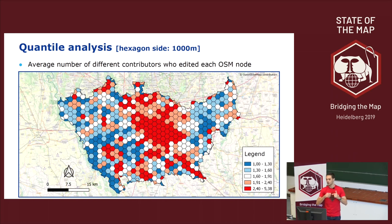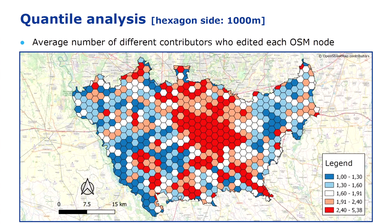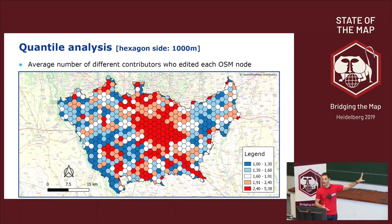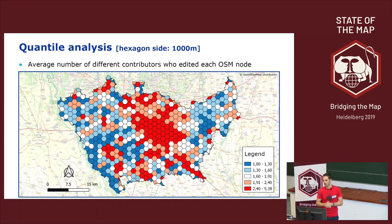To illustrate the added value of spatial association analysis, I compare it to a traditional quantile-based approach on the same data. With five quantile classes, we can still see where the highest and lowest values are, and the city center of Milan is visible. But with quantiles, we cannot immediately identify clusters and outliers, and quantiles are not applicable in bivariate or multivariate dimensions.